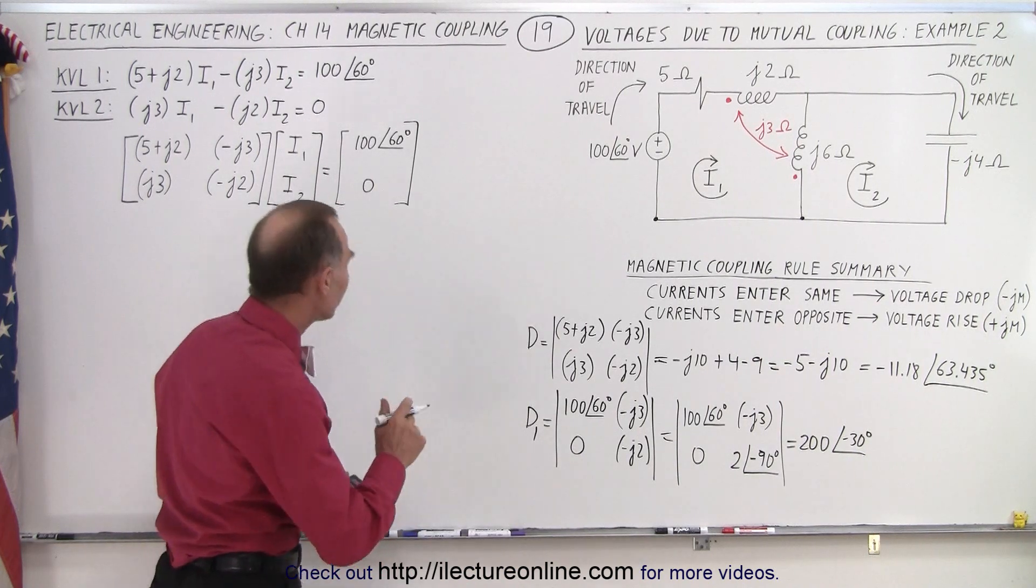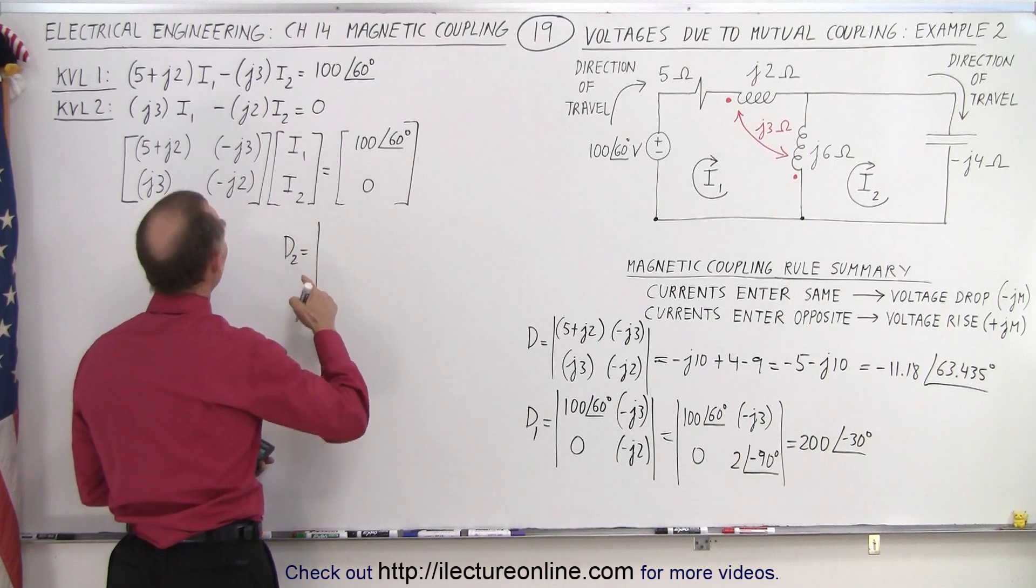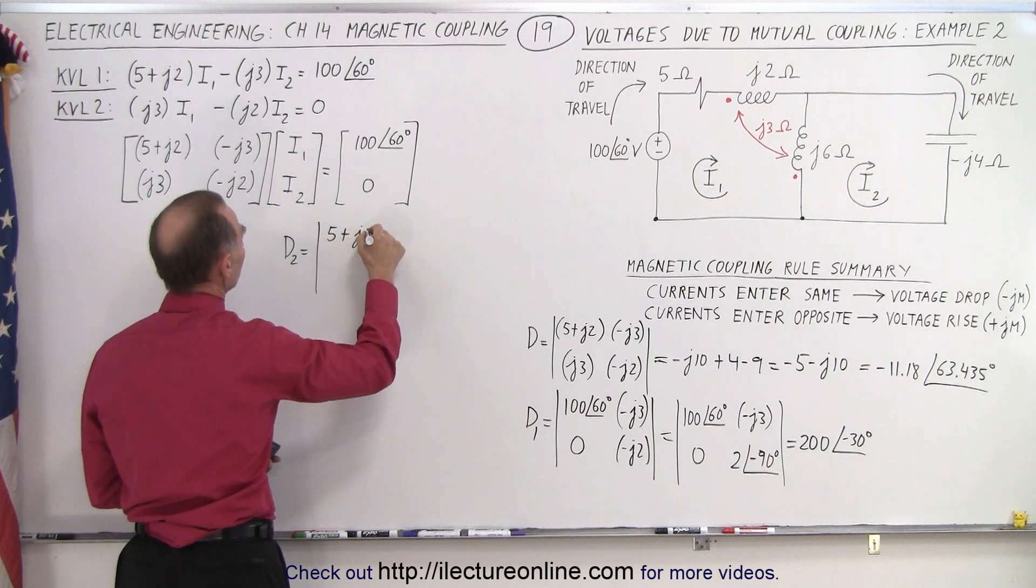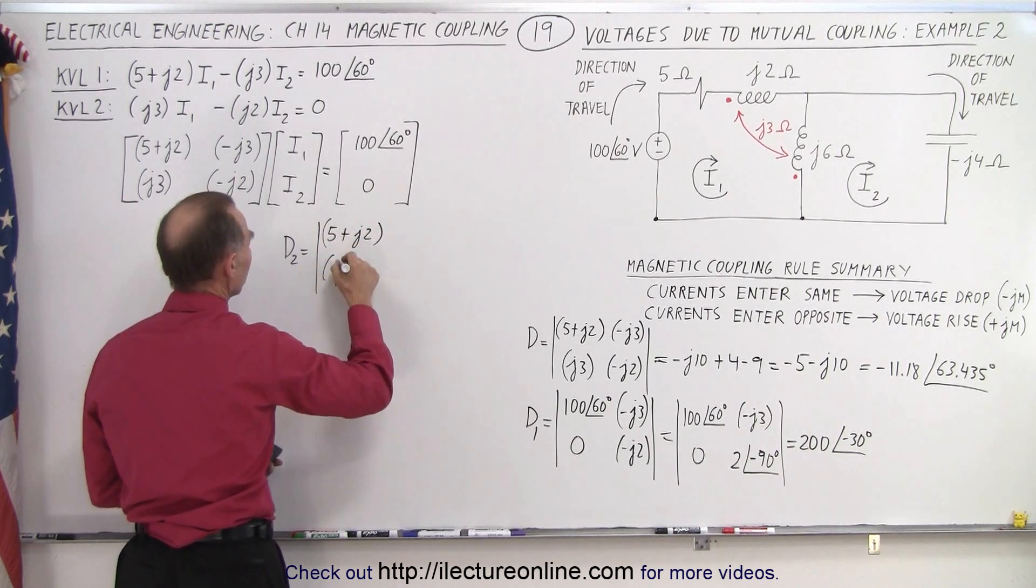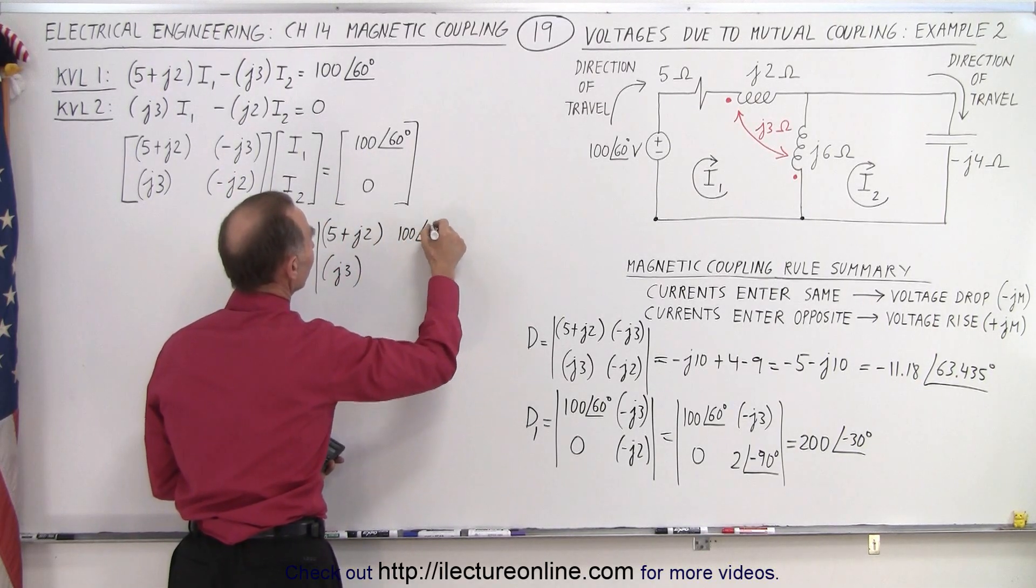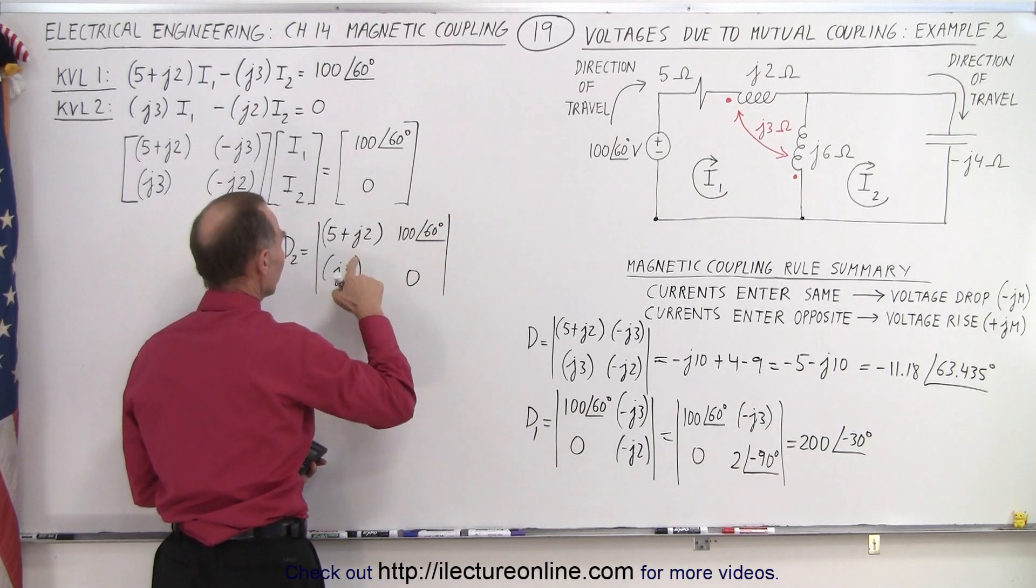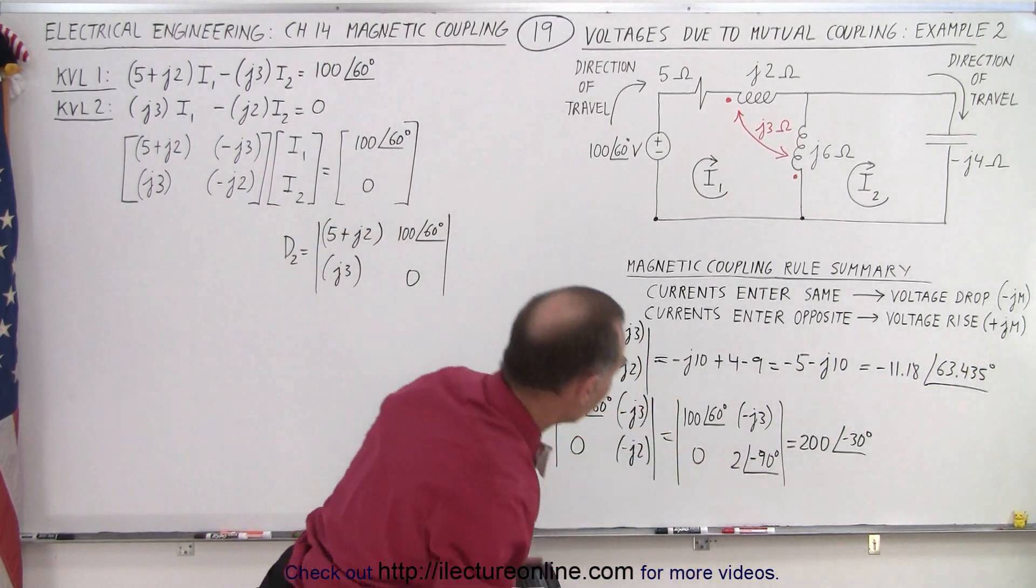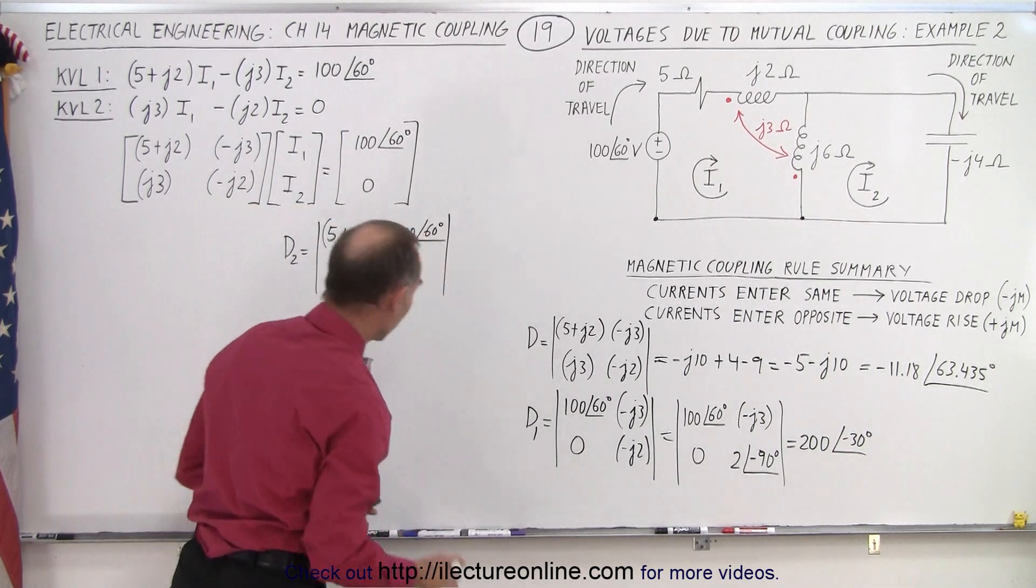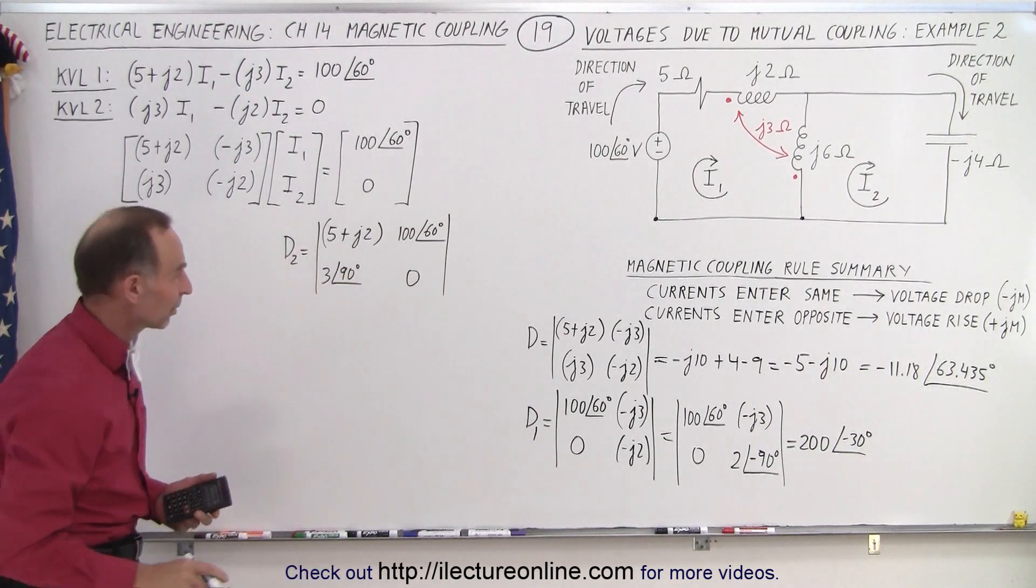We still need D2. So D2 is equal to, now we keep the first column, 5 plus J2 and J3. And the second column is replaced by this, so we have a 100 times the phase angle of 60 degrees, and we have a 0 here. Now I'm going to change this. Instead of writing it J3, that makes it a little easier. So instead of J3, I can write this as 3 with a phase angle of 90 degrees. That makes it easier to multiply.